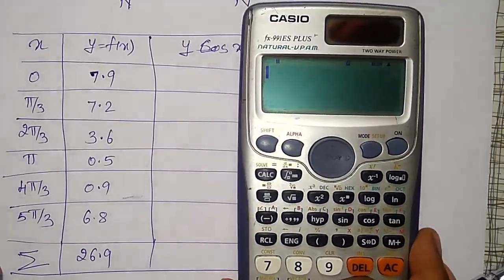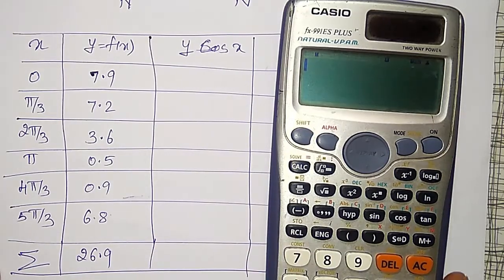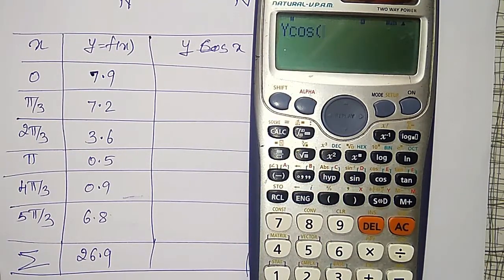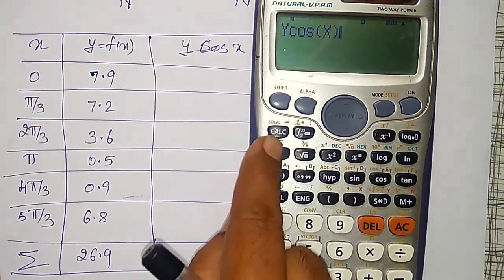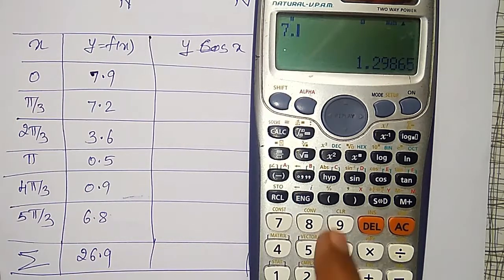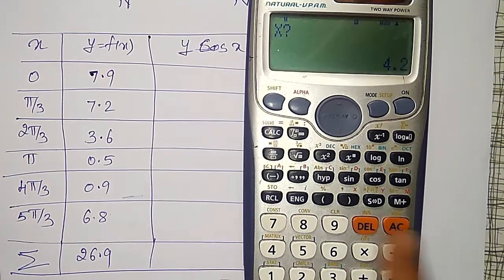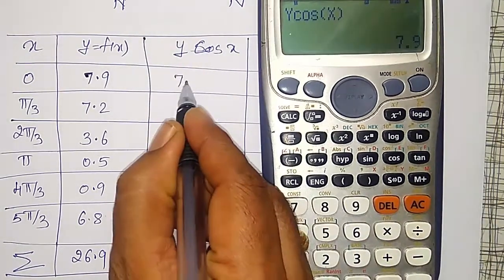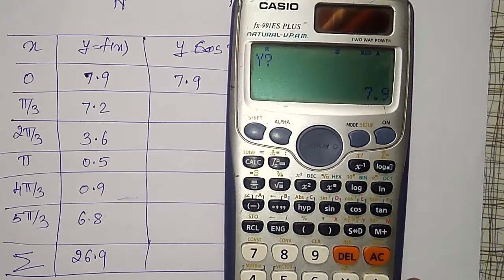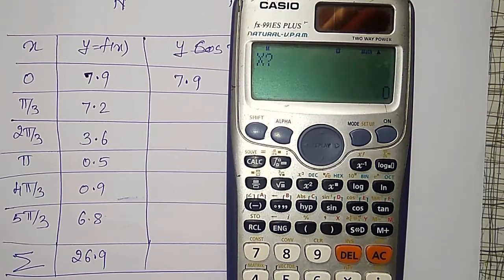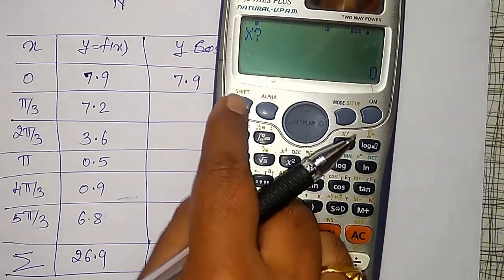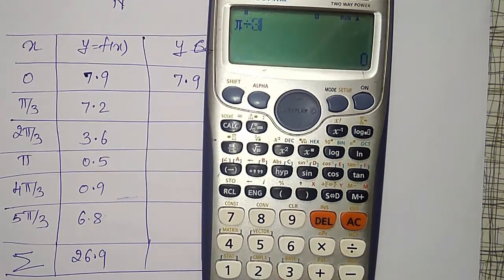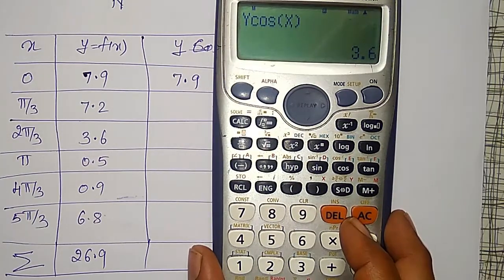Then, to find different values of y cos x, I will use the calc option. Every time I will not substitute y and x, only y and x I have to substitute. I will use alpha y into cos of alpha x. First time calc option, it will ask for y. My y value is 7.9 and press equal to, it will ask for x. My x value is 0. I am going to get 7.9 as it is. Like that, next again press only equal to y, y is 7.2 and again equal to x, pi by 3. You can use shift pi divided by 3, 3.6 I am going to get.